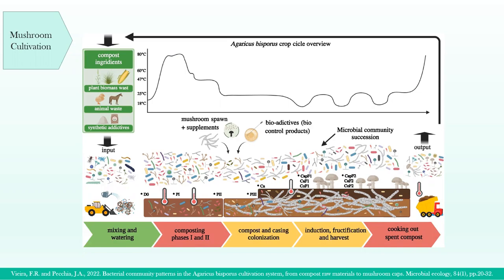This illustration was made by my colleague Fabrizio Vieira, and it's a nice overview of cropping as a whole. A mushroom crop consists of starting ingredients: plant biomass, typically wheat straw that's partially broken down, animal waste such as chicken or horse manure that supplies most of the protein content, and different synthetic additives. This all becomes the compost microbiome input — mixed and wetted, causing high microbial activity, followed by pasteurization.